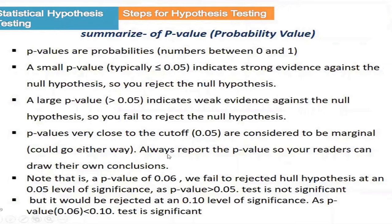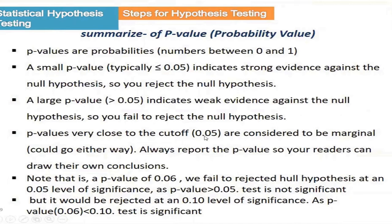One interesting thing you may ask: when the p-value is exactly 0.05, what do you do? This is the cut-off point. It depends on your test — you can accept or reject the null hypothesis. When the p-value is exactly 0.05 for a 5% level, or exactly 0.01 for a 1% level, this depends on your test. My suggestion: if it is at the boundary, it is better to reject the null hypothesis.